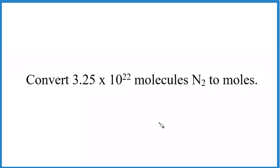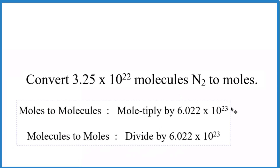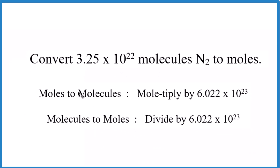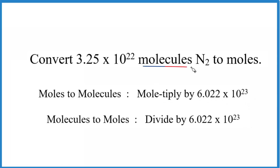A good mnemonic to help you remember: if you're going from moles to molecules, you multiply by Avogadro's number. In this case, though, we're going from molecules to moles, so we do the opposite — we divide by Avogadro's number.